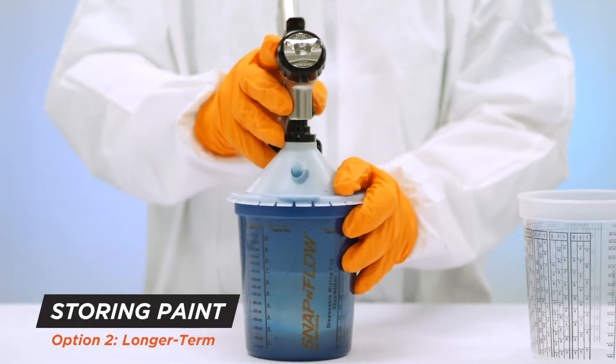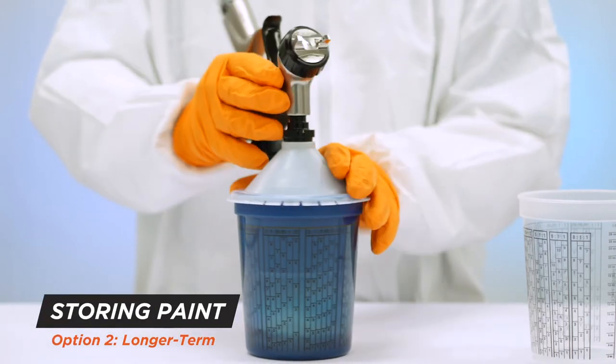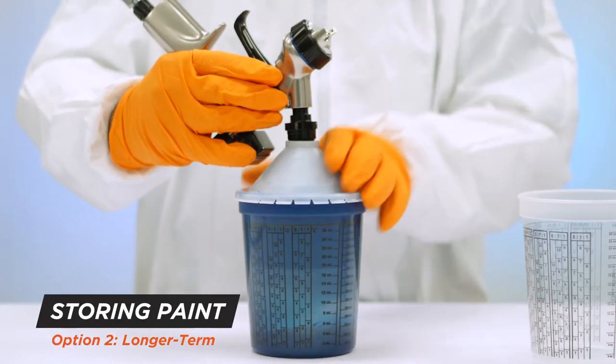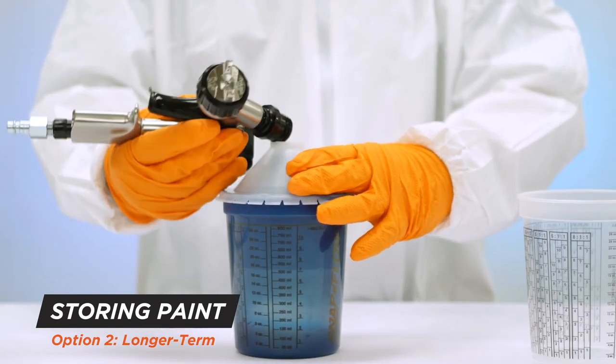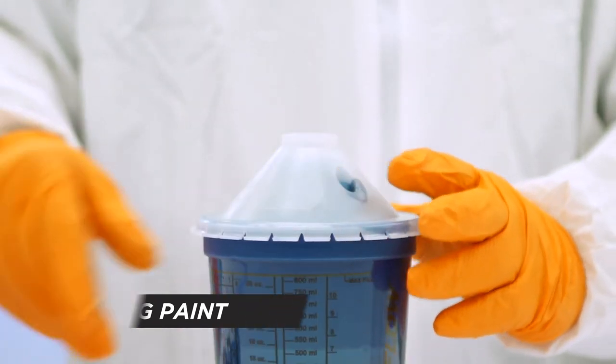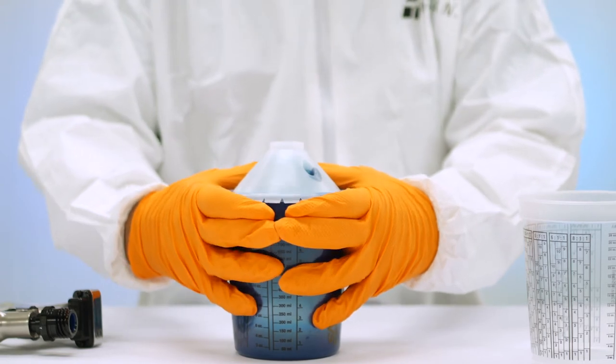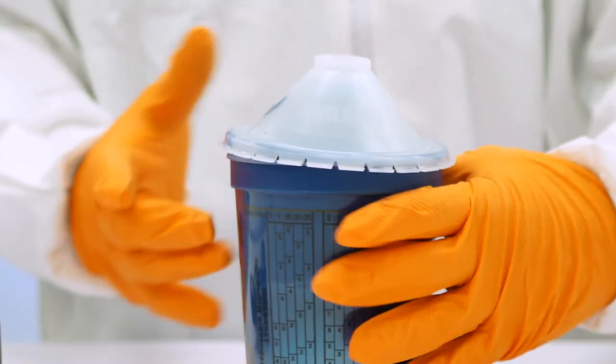For longer-term storage, use a flat lid to replace the lid and filter. To do this, remove the snap and flow lid by placing your thumbs on the top of one side of the cup. Reach your fingers around and under the cup lip and pry open.